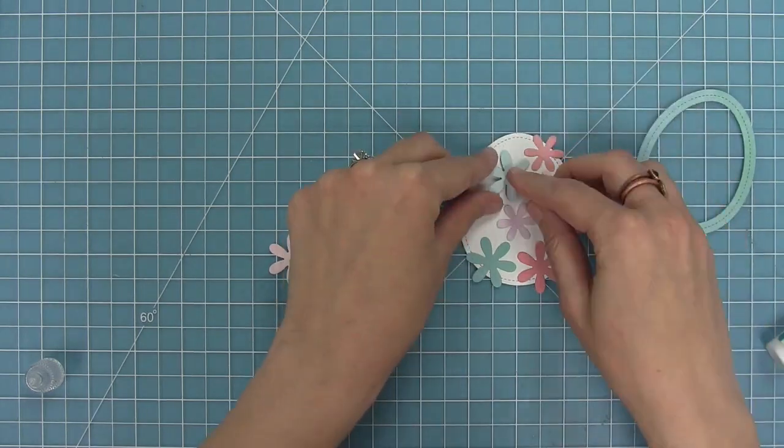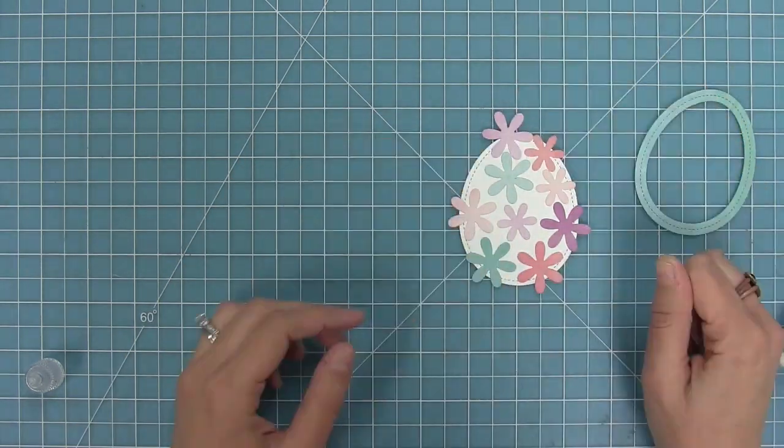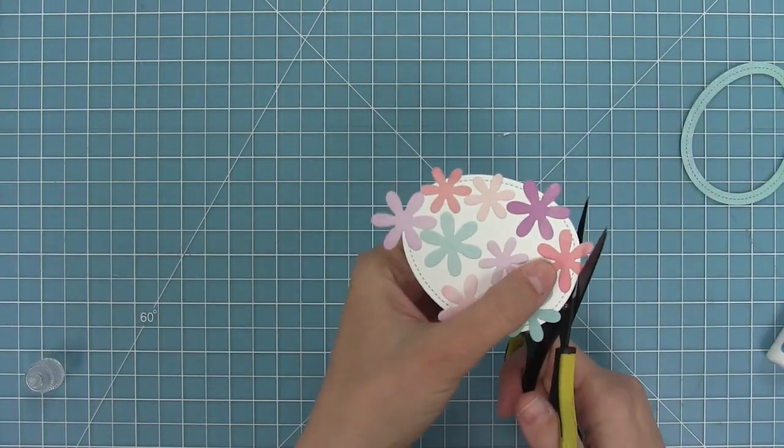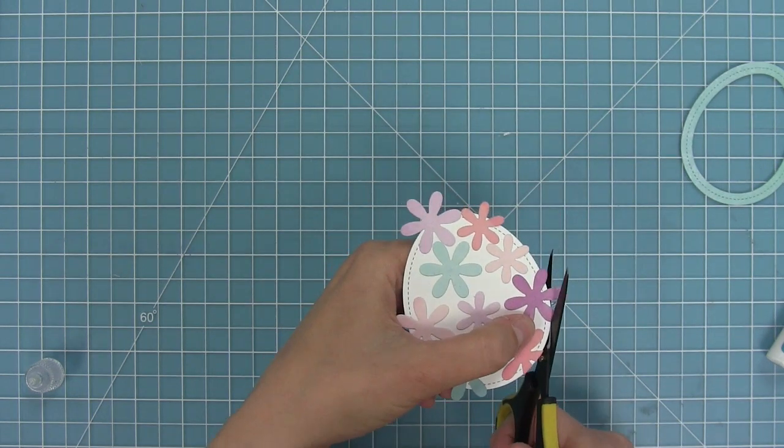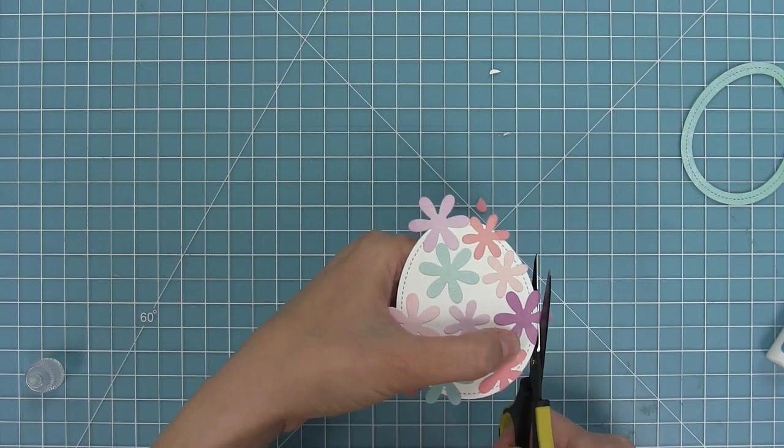Once all of the flowers are layered on to the egg, all we need to do now is to just cut off any excess. So I'm going to put my scissors right along the edge of my egg die cut and let that egg shape kind of guide my scissors so that I'm just trimming off any of the excess.